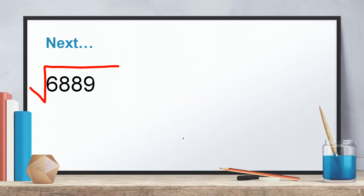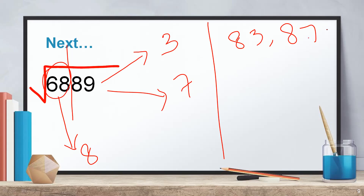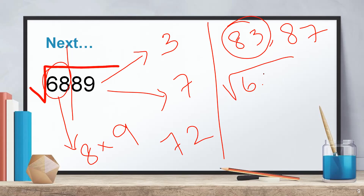Practice and increase your speed to solve in three seconds or less. Next: √6889. Ends with 9, so the answer ends with 3 or 7. First pair is 68; the perfect square below 68 is 64, which is 8². Choices are 83 or 87. Multiply 8 × 9 = 72. Since 68 is less than 72, choose the lower answer. √6889 = 83.